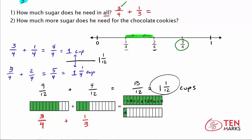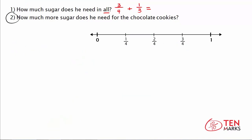Now let's move on to question 2: how much more sugar does he need for the chocolate cookies? Remember, it takes 3 quarters of a cup for the chocolate cookies and 1 third of a cup for the butter cookies. To find how much more sugar he needs, we use subtraction: 3 fourths minus 1 third.